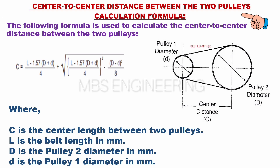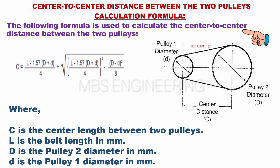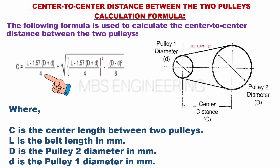Next, we'll learn about the center to center distance between two pulleys calculation formulas. The following formula is used to calculate the center to center distance between two pulleys: C equals L minus 1.57 multiplied by D plus d, and the obtained value divided by 4,